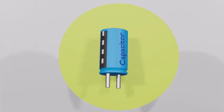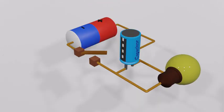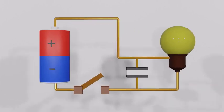This is an electrolytic capacitor. They have a negative pin and a positive pin. The negative terminal is marked with a black strip usually. We can connect the capacitor to a circuit in parallel like this — the negative terminal of the capacitor is connected to the negative side of the circuit and the positive terminal is connected to the positive side.